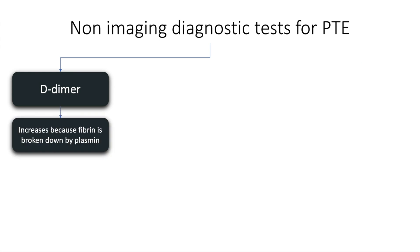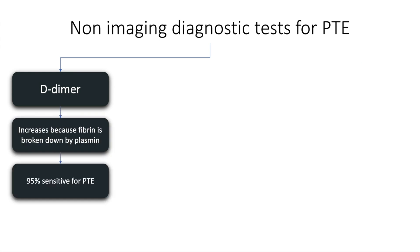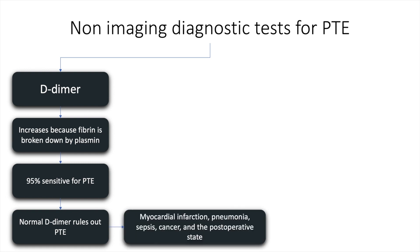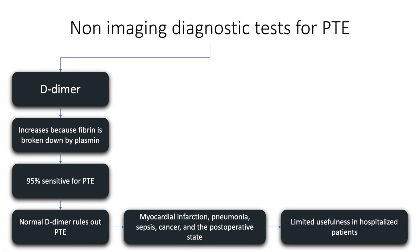D-dimer increases because fibrin is broken down by plasmin and is 95% sensitive for pulmonary thromboembolism. A negative D-dimer rules out PTE because of its high negative predictive value. However, in patients with myocardial infarction, pneumonia, sepsis, cancer, and the post-operative state, D-dimer may be elevated. Therefore, it is of limited usefulness in hospitalized patients.